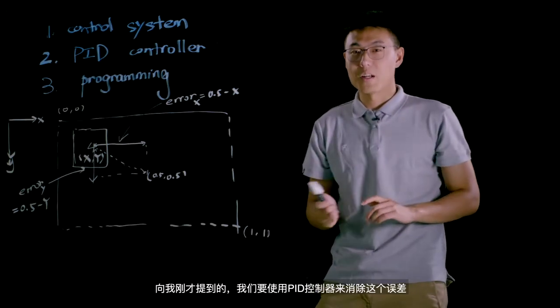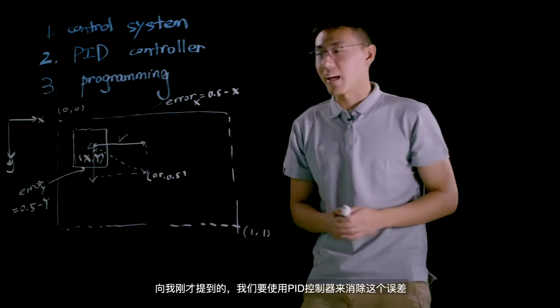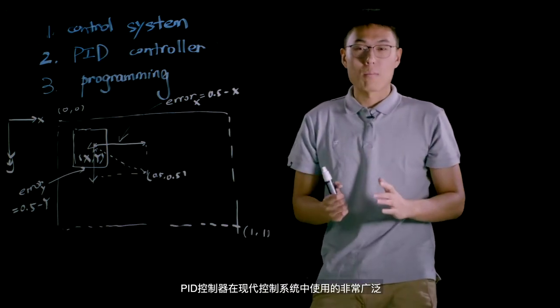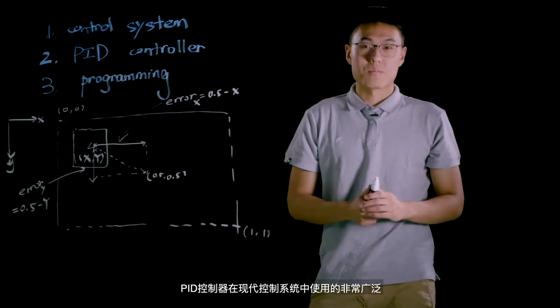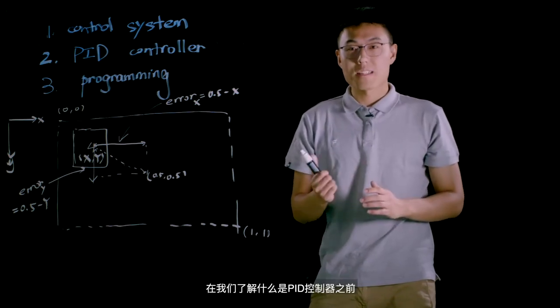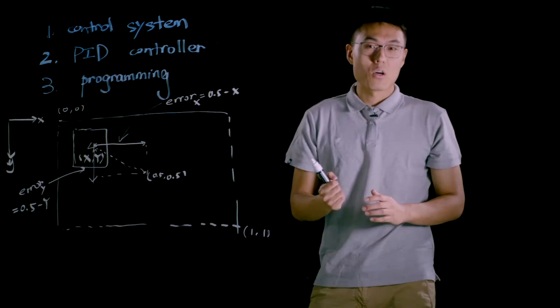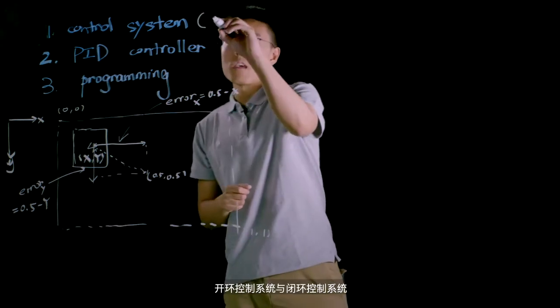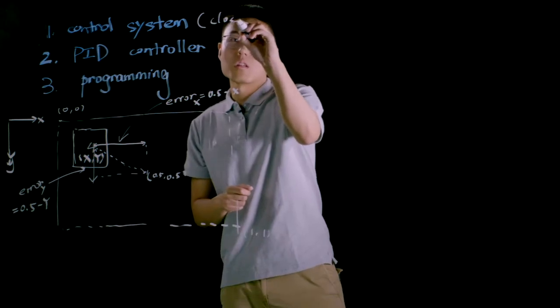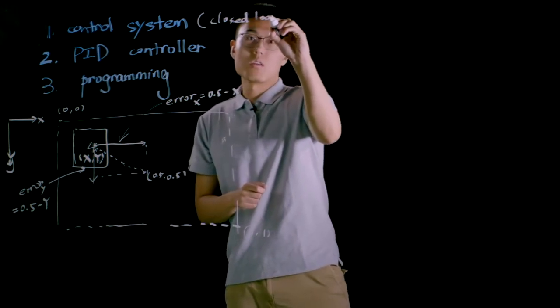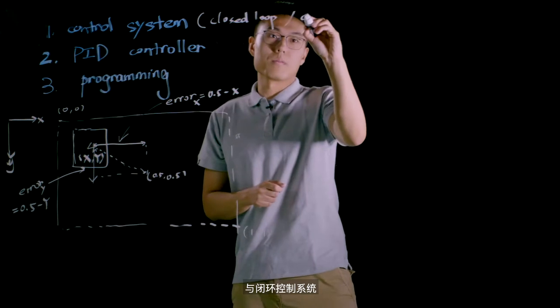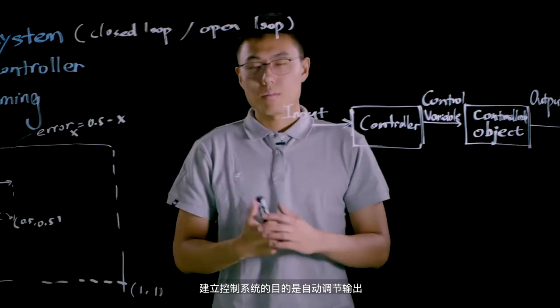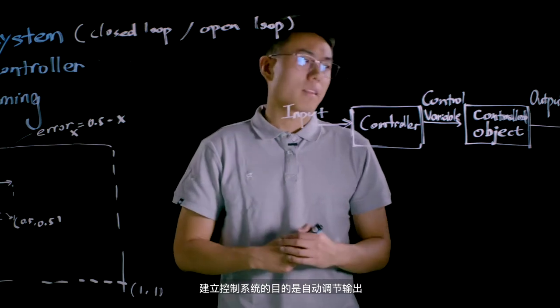Like I mentioned before, we use PID controller to eliminate the errors over here. So PID controllers are now being widely used in modern control systems. Before we understand what the PID controller is, we need to learn some concepts of the control system which can be either closed loop or open loop. The purpose of building a control system is to regulate the output.